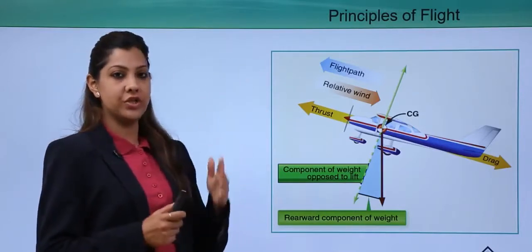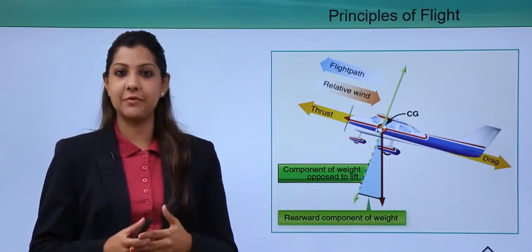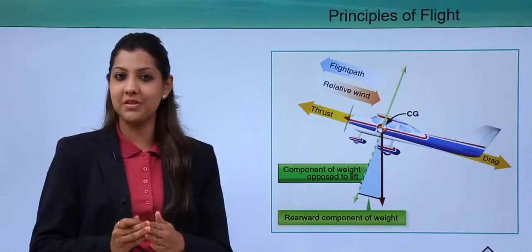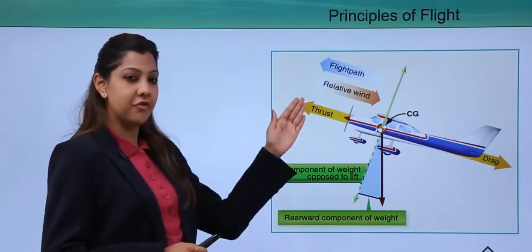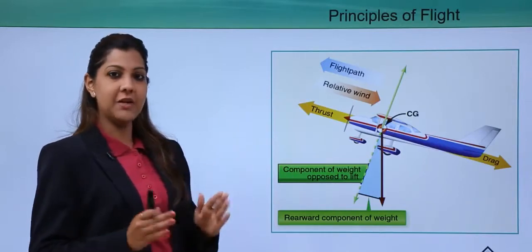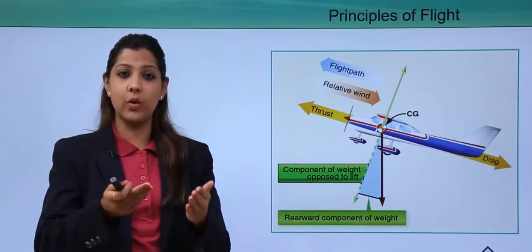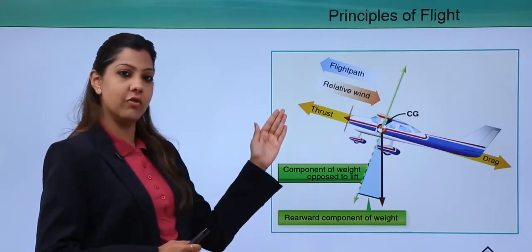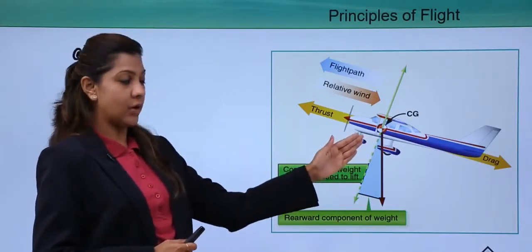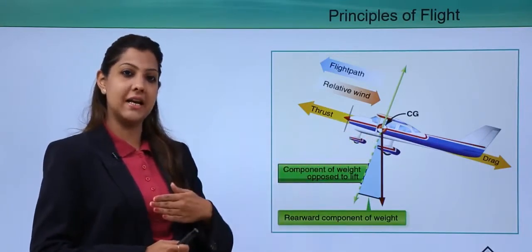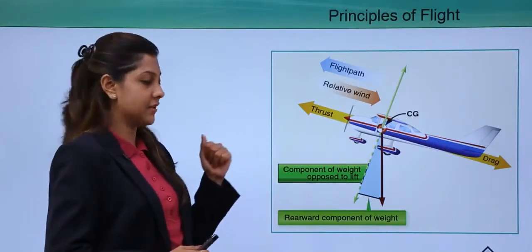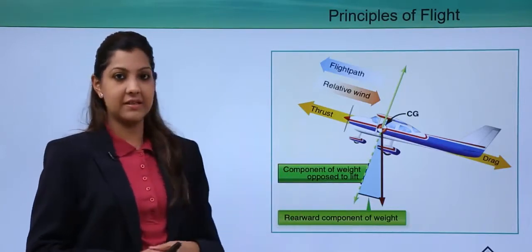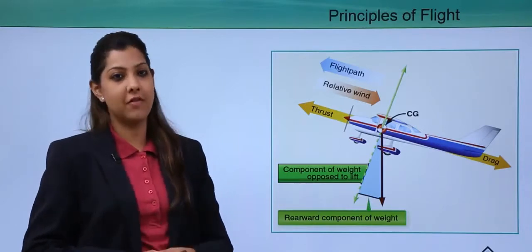There are certain principles of flight. The flight path is the route the aircraft takes from one destination to another, which the captain or pilot must follow. The relative wind goes in the opposite direction to the flight path, acting against the aircraft. Thrust is the forward movement of the aircraft, drag retards that forward movement, and there are weight components acting against lift.